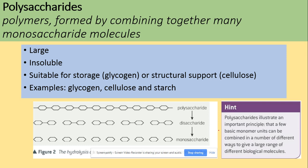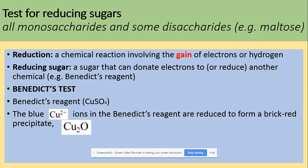So in terms of the polysaccharides, they are polymers formed by combining together many monosaccharide molecules. They are large, so they will be insoluble, and being large and insoluble makes them good for storage, like glycogen, or structural support, like cellulose. The examples we need to be aware of are glycogen, cellulose and starch. We will be looking at polysaccharides in our next video, but here we will be looking at the tests for reducing sugars.